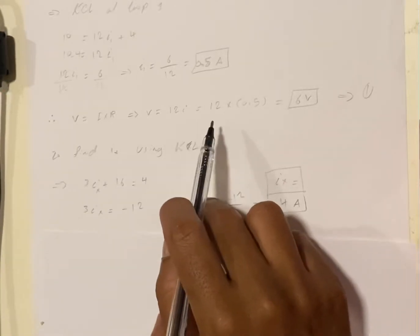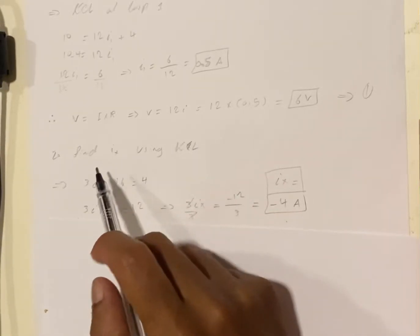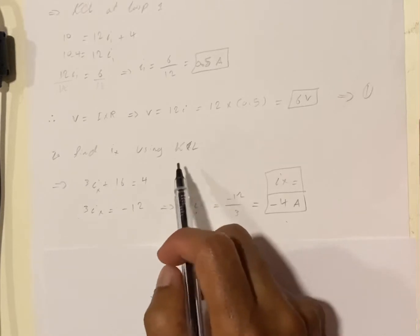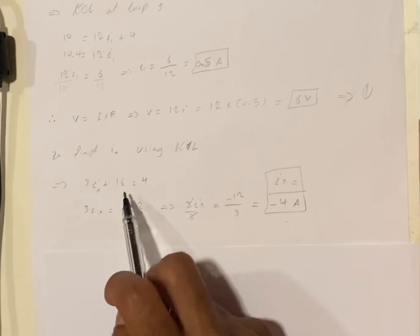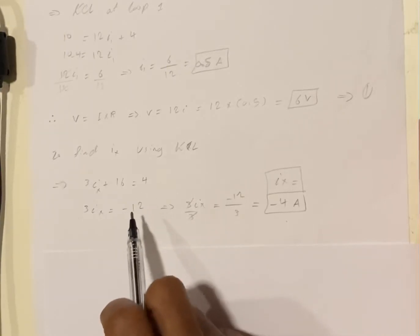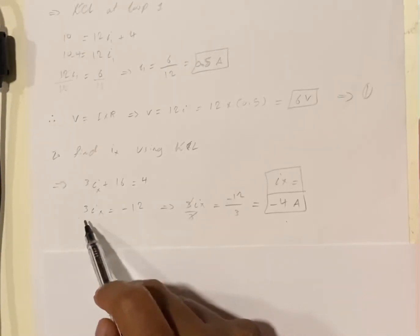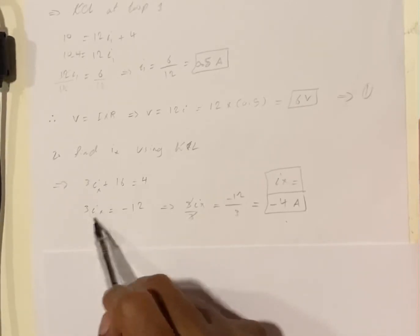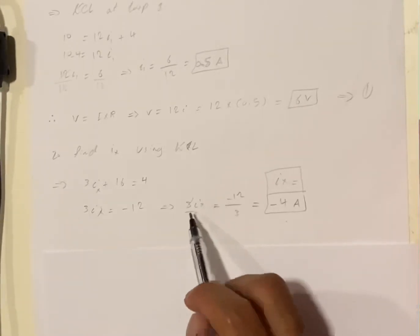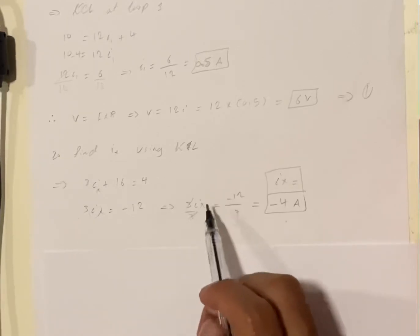To get Ix we're gonna use Kirchhoff's law also. So we have 3 Ix plus 16 equals 4. After solving we get 3 Ix equals minus 12.